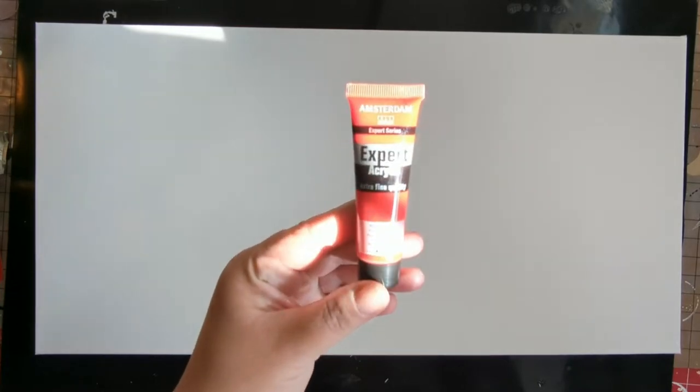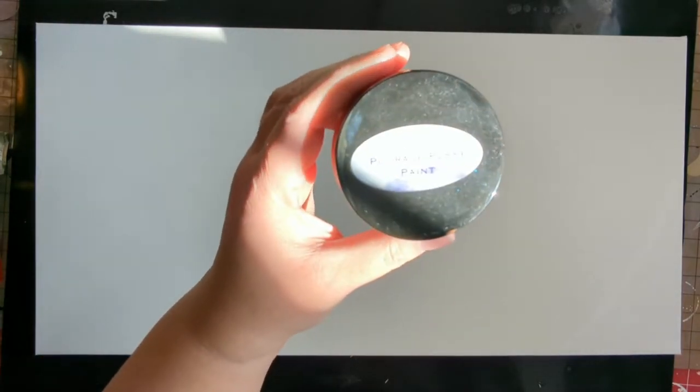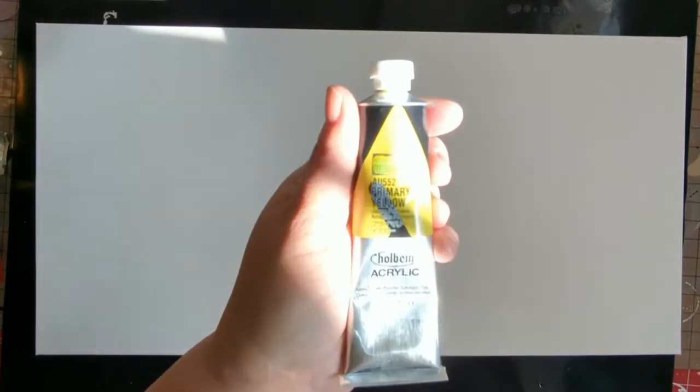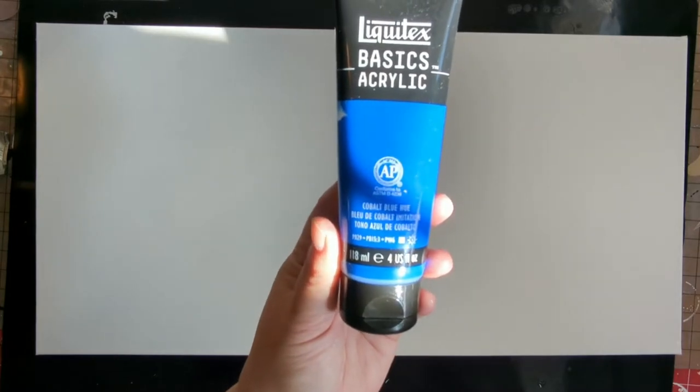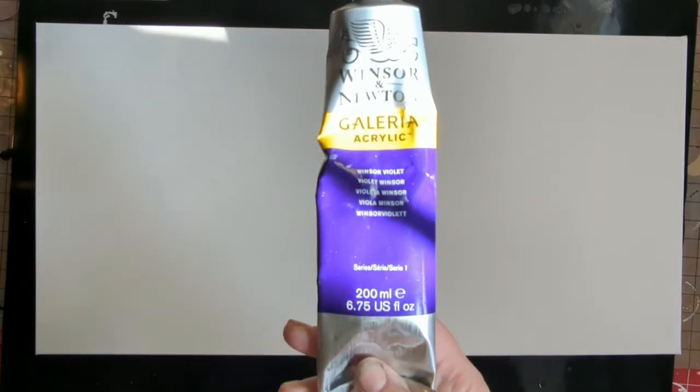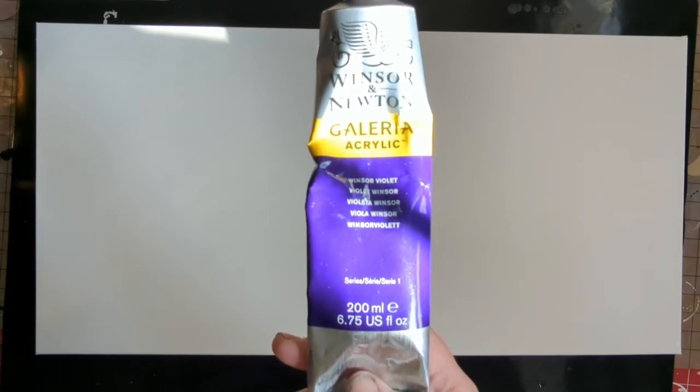The paints that I'm using today are Amsterdam Expert Acrylic Pyrole Red, Orange Marble Aid by Porridge Cosi Paint, Primary Yellow by Holbein Acrylic, Emerald Green by Amsterdam Acrylic, Cobalt Blue by Liquitex Basics, and finally Windsor & Newton Gallery Windsor Violet.